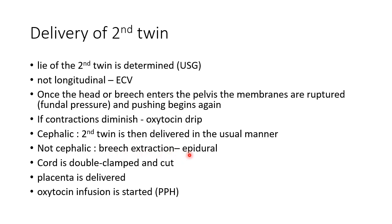After delivery of the second twin, the cord is double clamped and cut, and then the placenta is delivered. Oxytocin infusion is started because the risk of postpartum hemorrhage is greater in cases of multiple pregnancy.